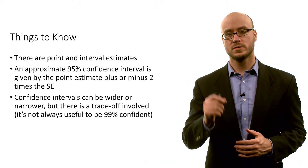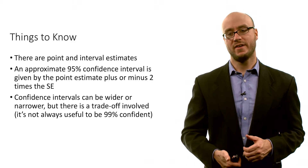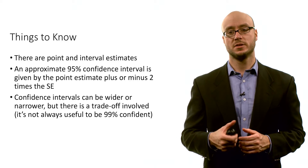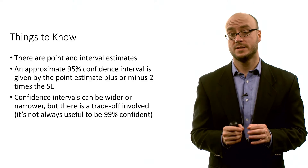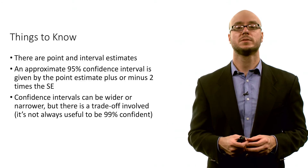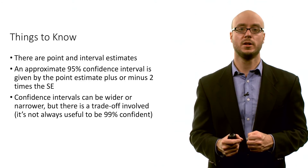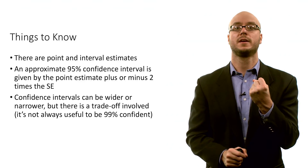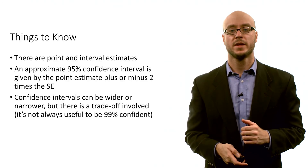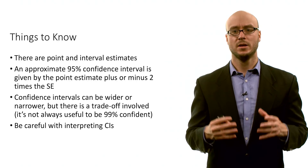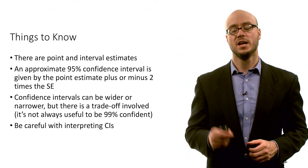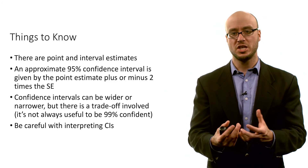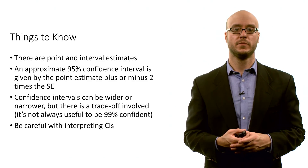Confidence intervals can be wider or narrower, but there's a tradeoff involved. With a higher level of confidence, that value of Z-star is going to be larger and your interval will be wider. With a lower level of confidence for a given sample size, Z-star is smaller and your interval will be smaller. The only way around this tradeoff is to have a larger sample size, because with a larger sample size the standard error is smaller — and the standard error is crucial, since the interval estimate is simply the point estimate plus or minus Z-star times the standard error. Be careful when you interpret confidence intervals: a 95 percent confidence interval tells us we're 95 percent confident that the true population parameter lies within that interval. We know the properties of the sample, but the idea is to use sample information to generalize about some unknown population parameter.